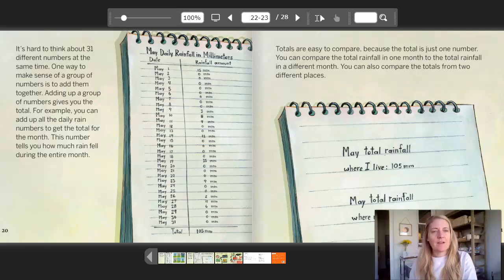Totals are easy to compare because the total is just one number. You can compare the total rainfall in one month to the total rainfall in a different month. You can also compare the totals from two different places. May total rainfall where I live 105 millimeters. May total rainfall where my cousin lives 56 millimeters.